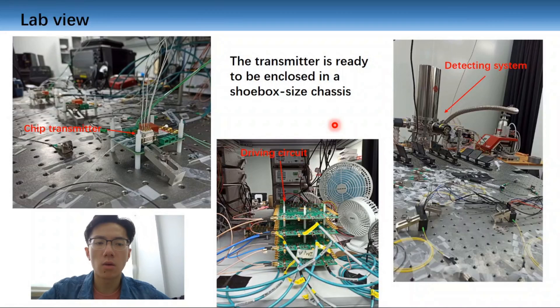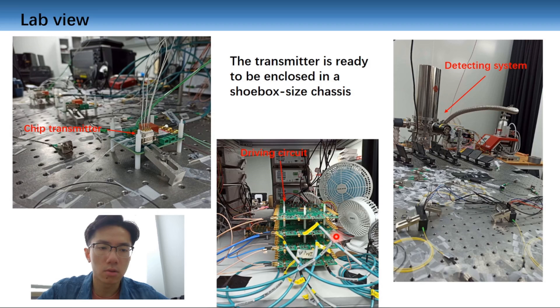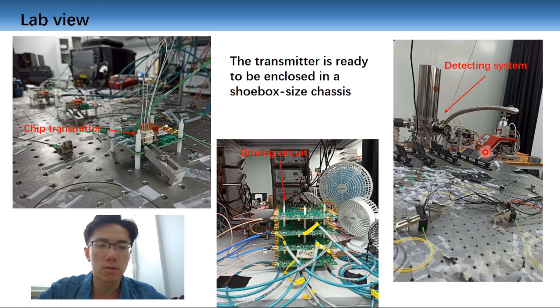I want to show you the lab view of our system. Due to the compact size of the transmitter chip, it is ready to pack into a shoebox-size chassis with laser diodes and the driving circuit. The driving circuits are stacked up to drive multiple chips, each supporting four different channels. The superconducting nanowire detectors are enclosed in a cryogenic chamber, which is cooled to 2.2 Kelvin. The detecting system is much bulkier than the transmitter, but it can be shared among users in the MDI-type untrusted relay structure.